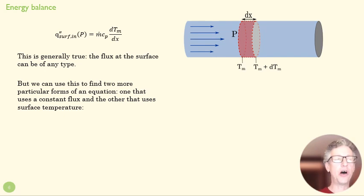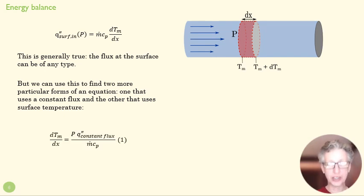And we can solve this if we assign two particular kinds of boundary conditions, a constant flux condition or a constant surface condition. If we use a constant flux condition, we end up with this equation right here. And you can see here that all I've done is replace this with q double prime constant flux, moved it to the other side.